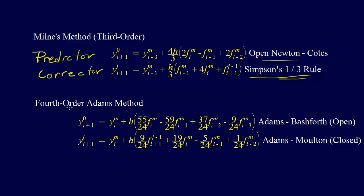Then, similar to this, we have the fourth order Adams method. And so we have this predictor using the Adams-Bashforth open integration formulas, and I'll show you those in a minute. And then we have the corrector based on the Adams-Moulton closed integration formulas.